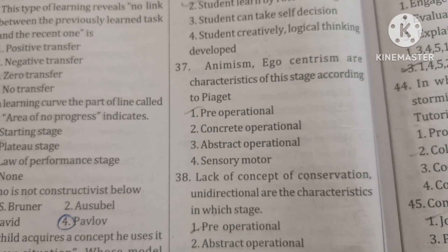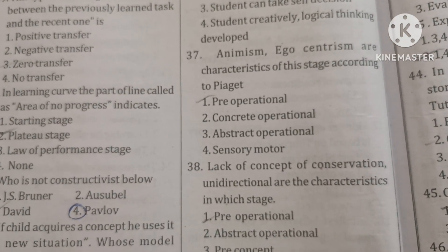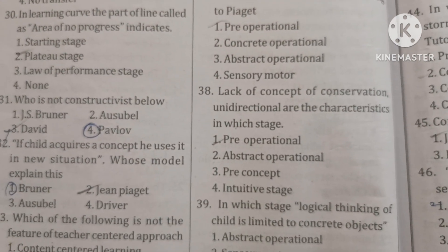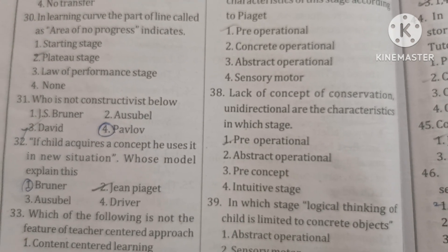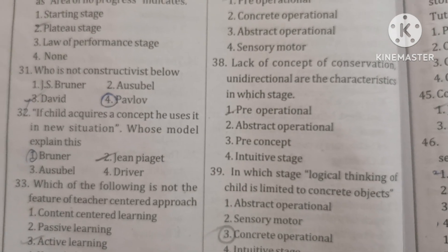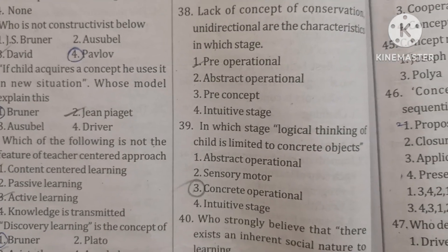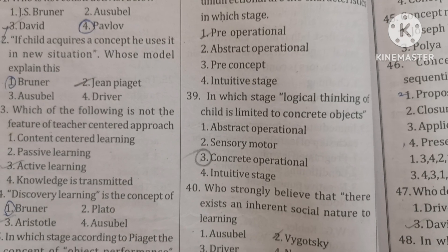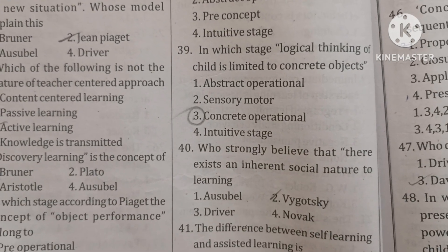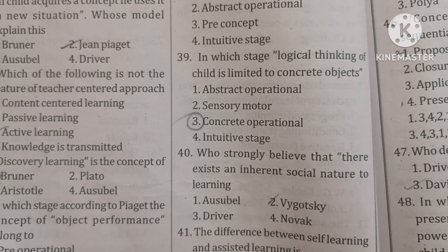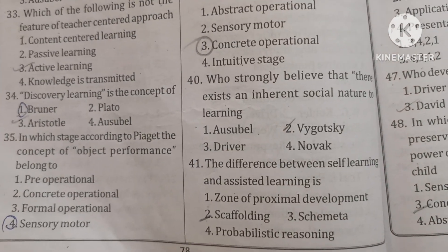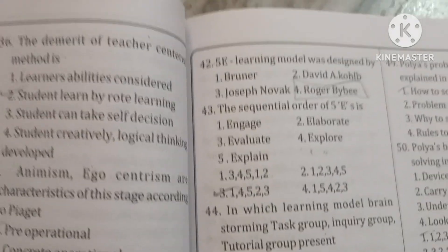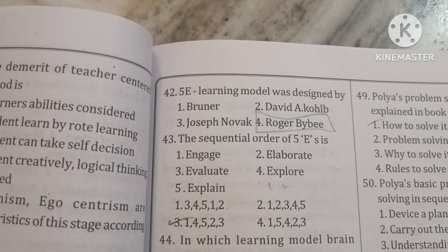Animism and egocentrism are characteristics of the pre-operational stage according to Piaget. Lack of concept of conservation and unidirectional thinking are also characteristics of the pre-operational stage. In the concrete operational stage, logical thinking of the child is limited to concrete objects. Who strongly believes that there exists an inherent social nature to learning? That is Vygotsky. The difference between self-learning and assisted learning is scaffolding. The 5E learning model was designed by Roger Bybee.